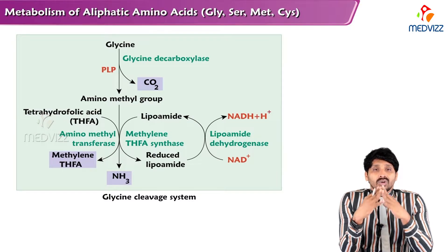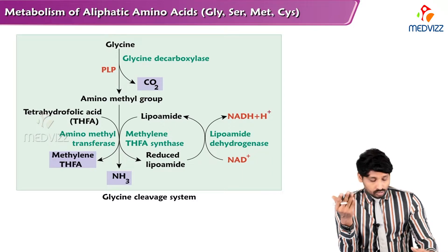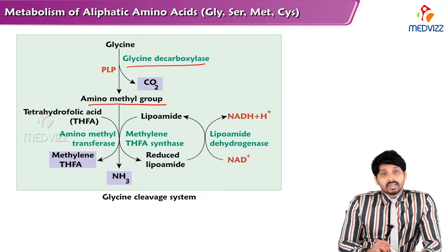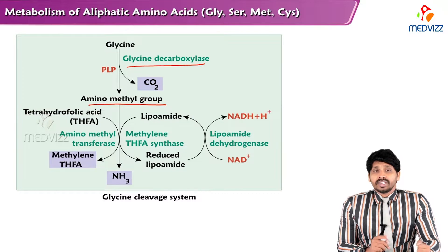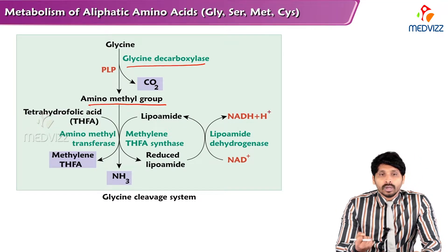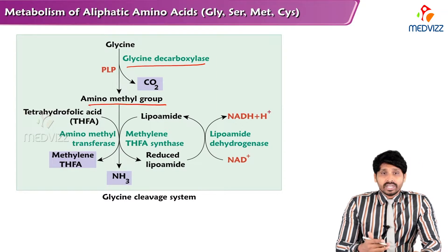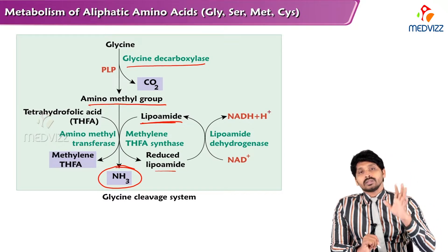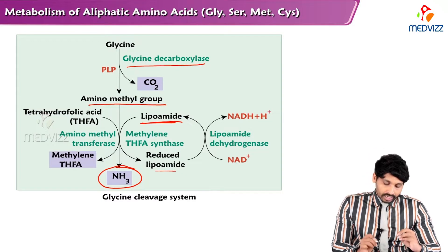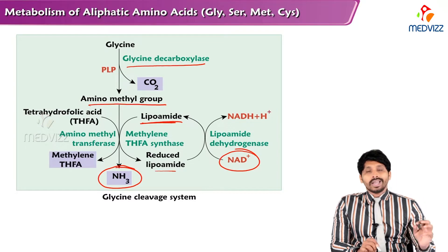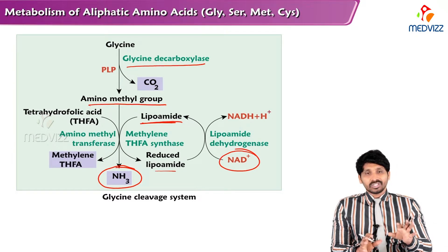Once glycine is present, what is its metabolic fate? Glycine undergoes decarboxylation to form an aminomethyl group by the enzyme glycine decarboxylase, which is a PLP-dependent enzyme — PLP being pyridoxal phosphate, a B6 water-soluble vitamin. Tetrahydrofolic acid again comes into action, taking up the methyl group to form methylene tetrahydrofolate by aminomethyl transferase. A coenzyme lipoamide is also present and is converted to reduced lipoamide, releasing free ammonia. This reaction takes place exclusively in the liver. Reduced lipoamide is converted back to lipoamide with NAD+, producing NADH + H+ by lipoamide dehydrogenase.